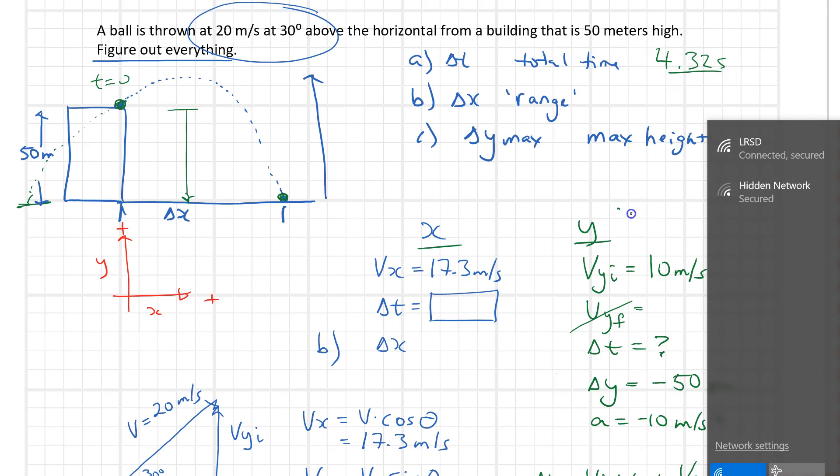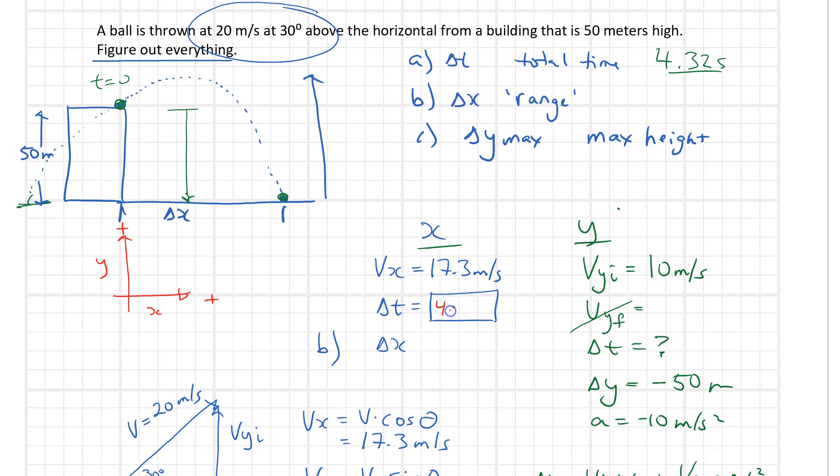Now we've got to figure out the range. I brought in the 4.32 seconds to the other side here, and I'm going to say delta x is going to be equal to vx times delta t. So that is 17.3 multiplied by 4.32, which gives me 74.7 meters. So the answer to this one is 74.7 meters.